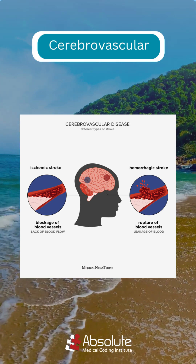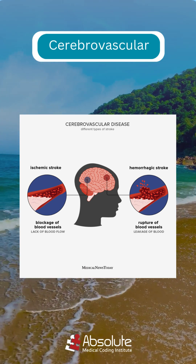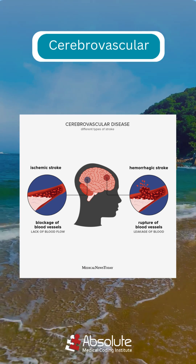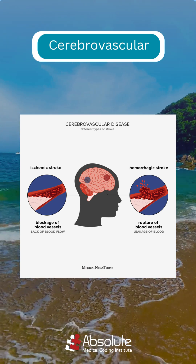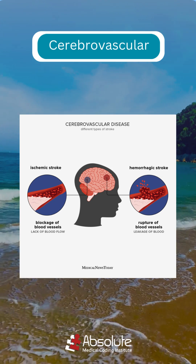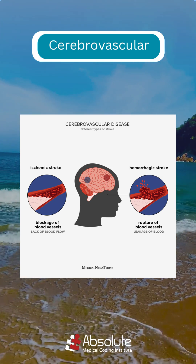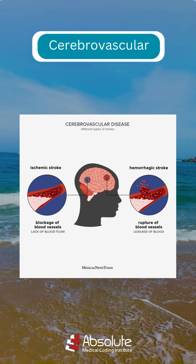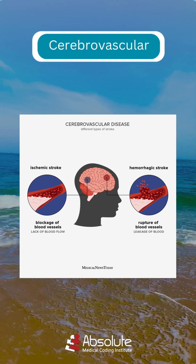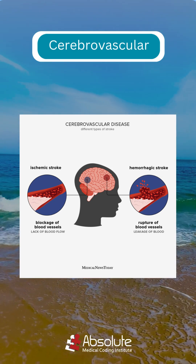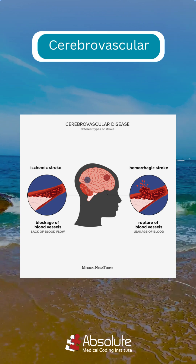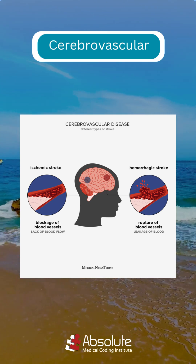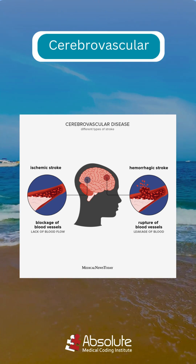Did you know a stroke happens when the brain doesn't get enough blood supply? There are two main types. Ischemic stroke is the most common type, caused by a blood clot or blockage in an artery, usually from buildup of plaque in the vessels.